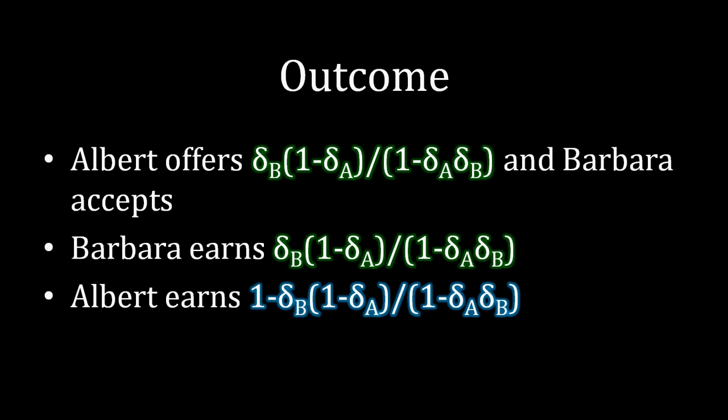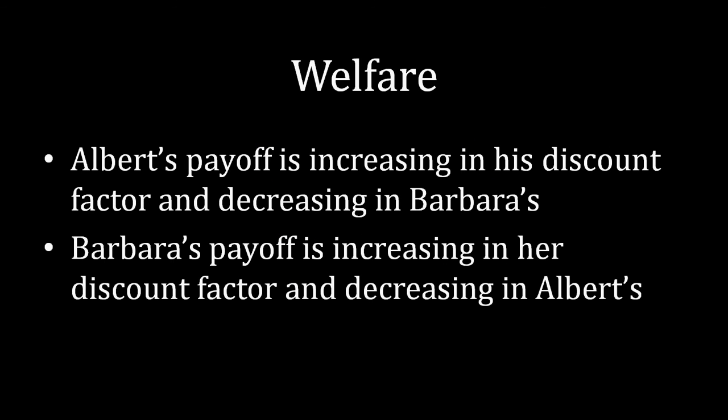Now that we know how much the players earn, we can analyze their relative welfare. Without doing the calculus on screen — you can take derivatives or plug in numbers yourself — Albert's payoff is increasing in his own discount factor and decreasing in Barbara's, whereas Barbara's payoff is increasing in her discount factor and decreasing in Albert's. This should make intuitive sense: the more patient Barbara is, the better the payoff she gets, and the more impatient Albert is, the better that is for her.